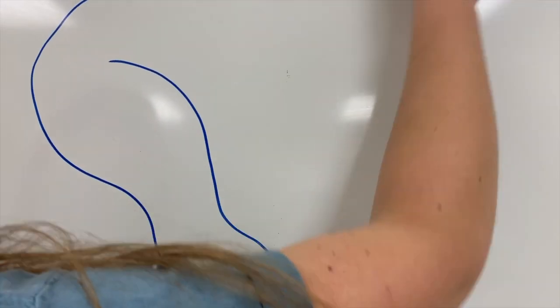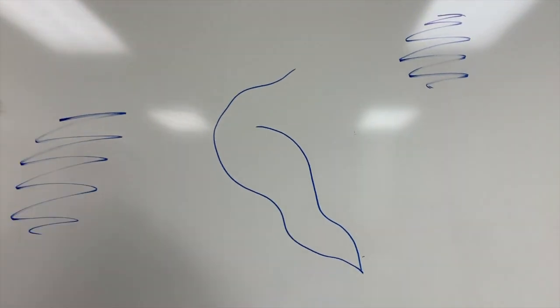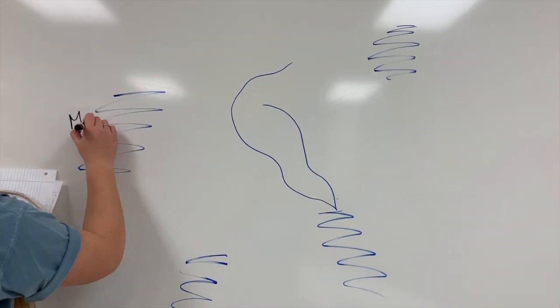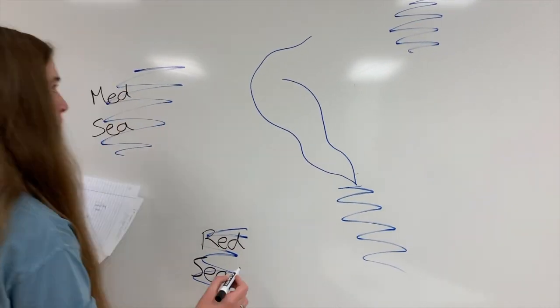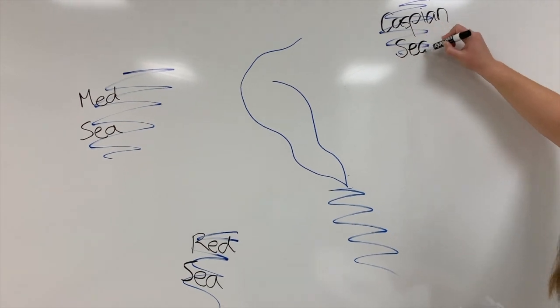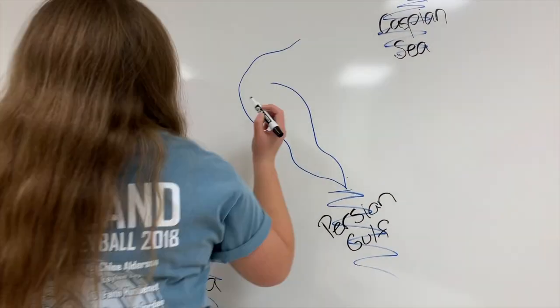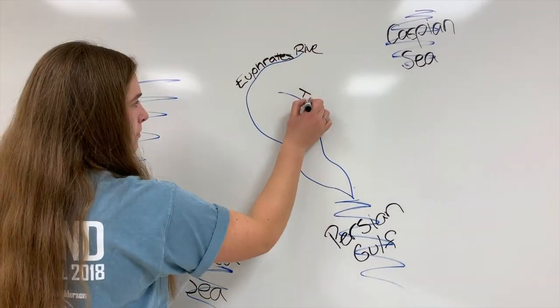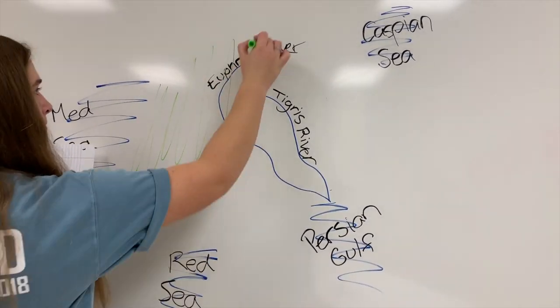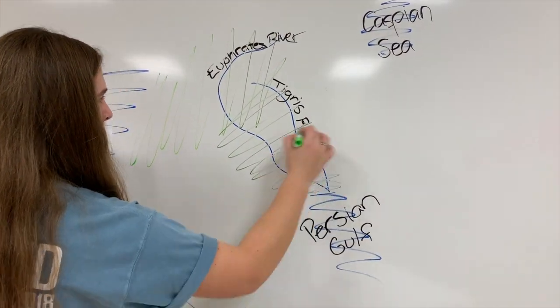Mesopotamia was located in modern-day Iraq, which is next to the Tigris River and the Euphrates River. This patch of land earned its name the Fertile Crescent due to its seasonal flooding. This patch of land is located between the Mediterranean Sea, the Red Sea, the Persian Gulf, and the Caspian Sea.